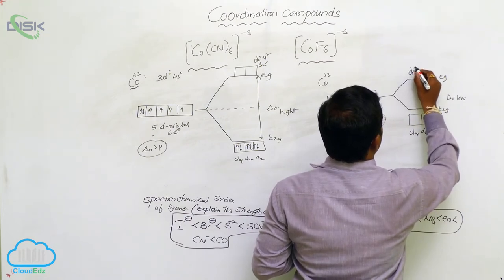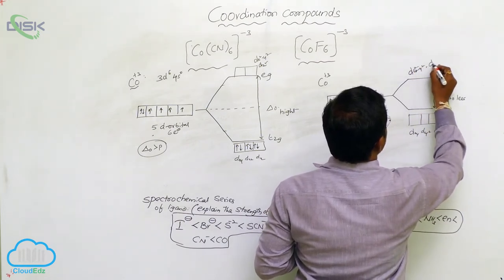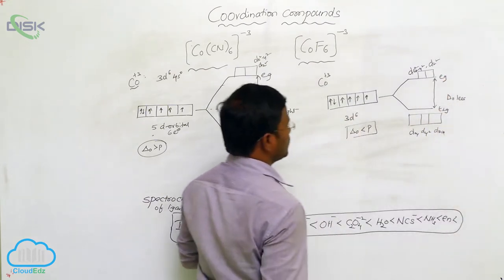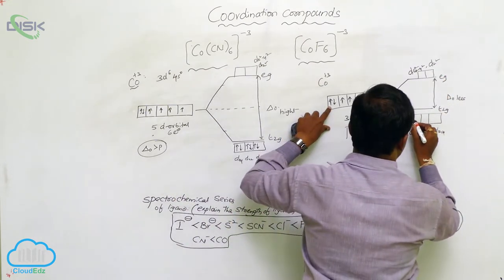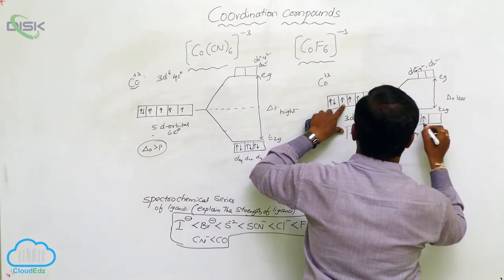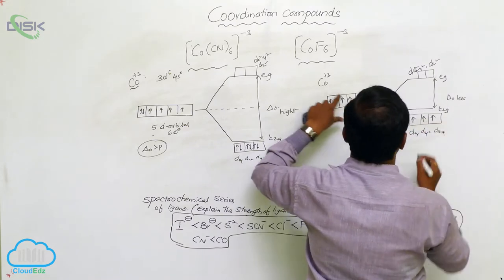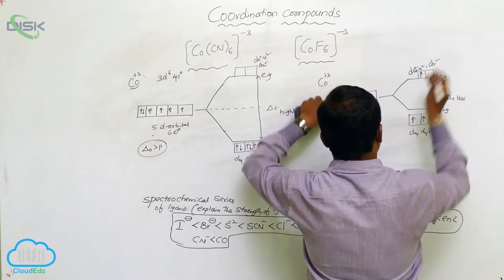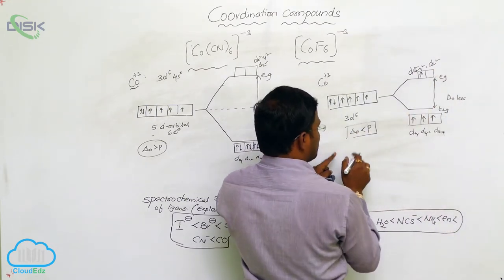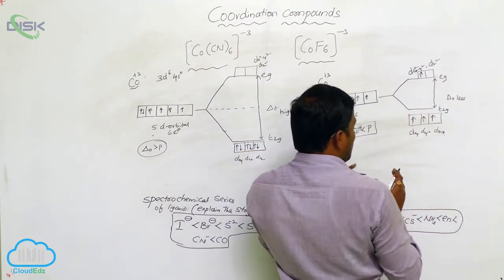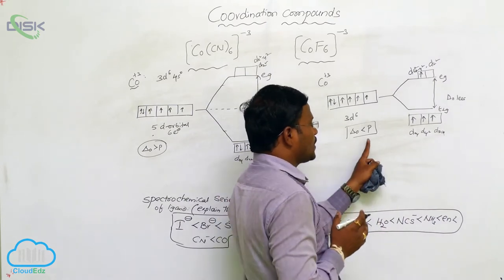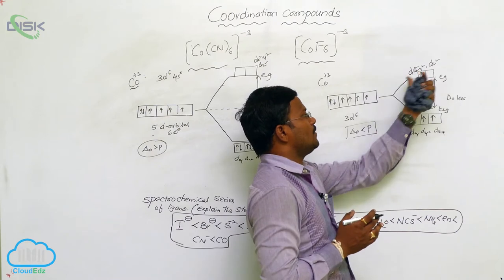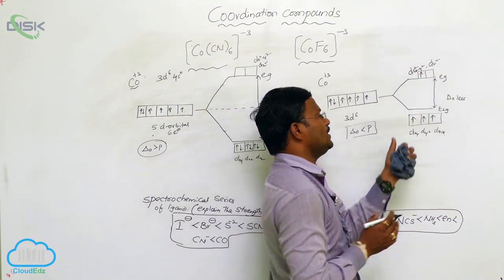Similarly, dx²-y² and dz² orbitals are also present here. The first electron enters here, second electron enters here, third electron enters here. Now the fourth electron enters into the Eg level because delta₀ is less than P — meaning the amount of energy required for pairing is more than the energy needed for the electron to jump into the Eg energy level.